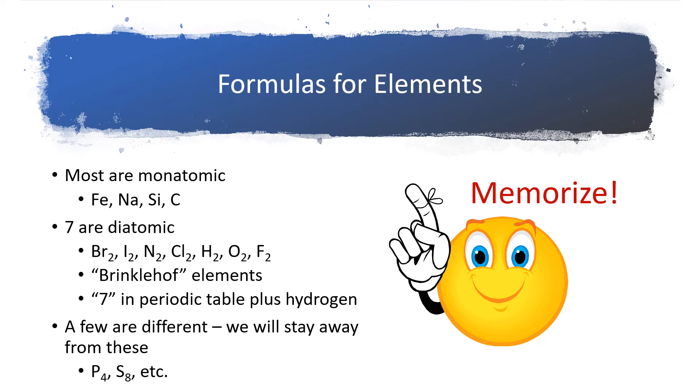There are seven elements, though, that in their naturally occurring form exist as diatomic molecules. Diatomic means two atoms, so we have to write the formula for these seven elements with a subscript of two on them. These elements are bromine, iodine, nitrogen, chlorine, oxygen, and fluorine. If you kind of slur together those element symbols, they spell a funny name, Brinkelhoff. So I'll refer to these elements as Brinkelhoff elements, and that's my way of saying, oh well when you write that you have to put a two on it. If you locate these seven elements in the periodic table, they make sort of a seven over in the upper right corner of the periodic table, but hydrogen over there on the left side of the periodic table also is one of these Brinkelhoff elements.